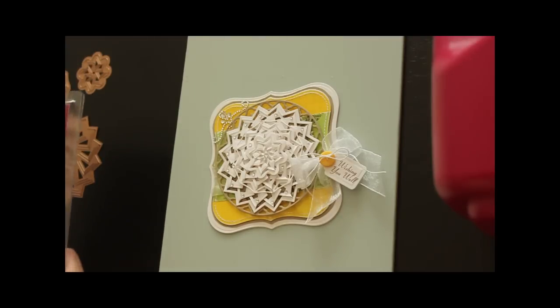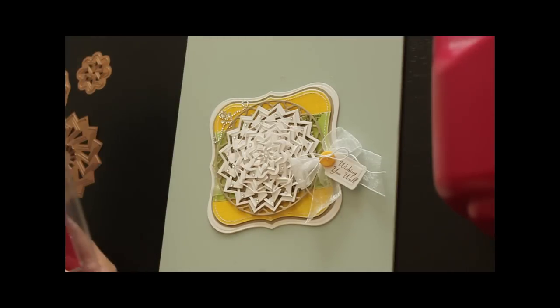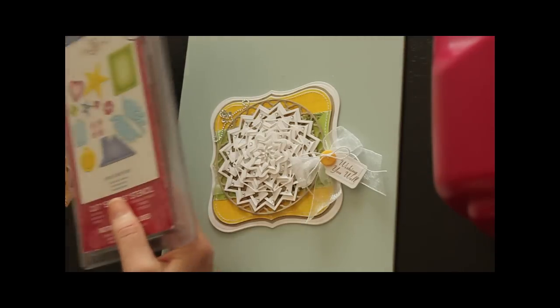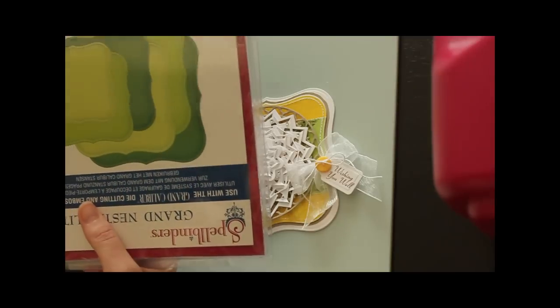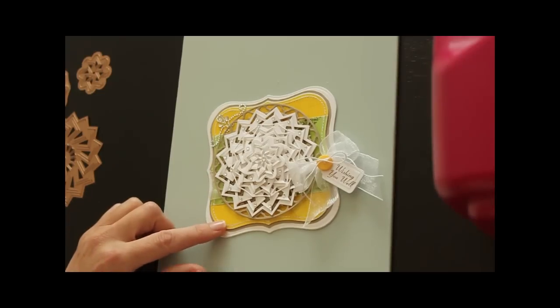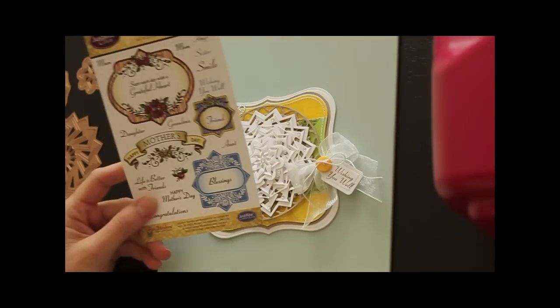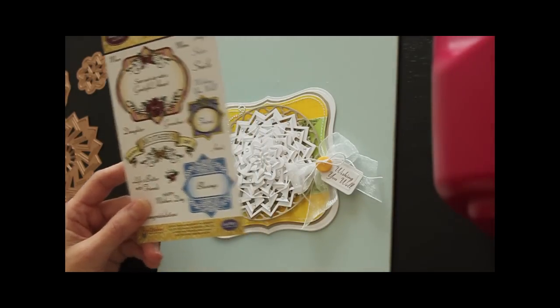I also used the largest circle of the splendid circles as a base, the tag from Home Sweet Home for my sentiment, and for the card base I used the Grand Label 1 dies. The patterned paper is from Bobonnie's Country Garden selection and the sentiment is from Just Right Stamper's Vintage Rose Medallion.